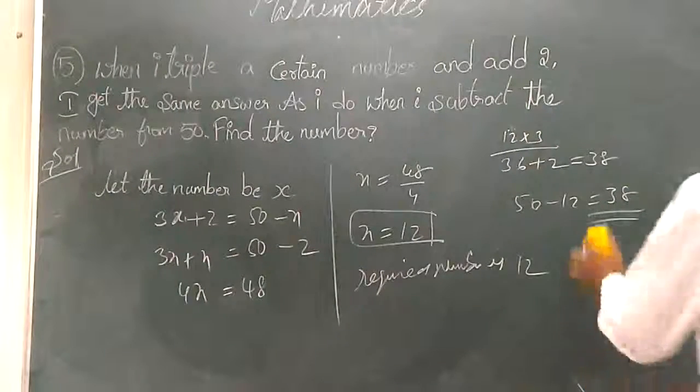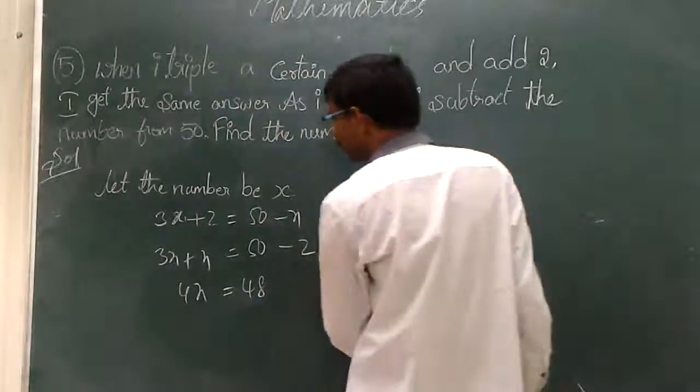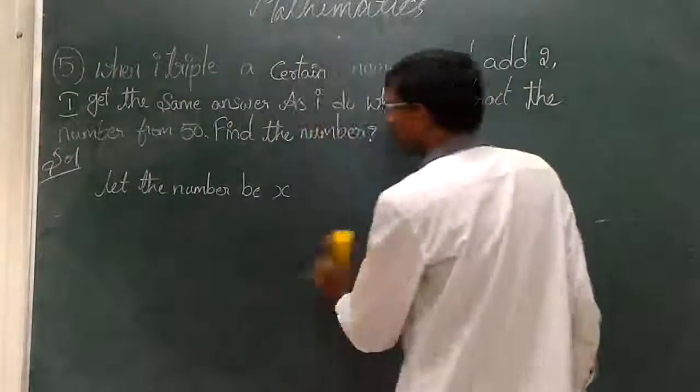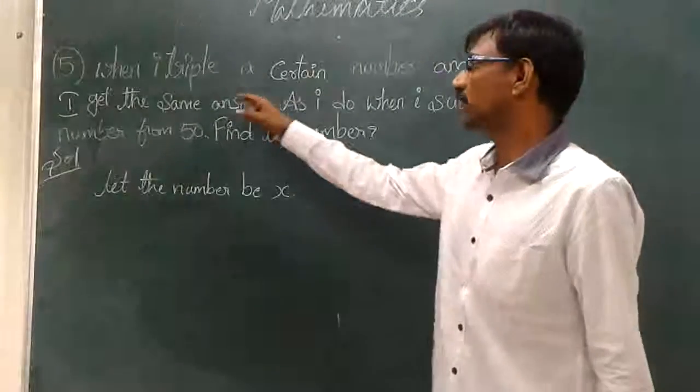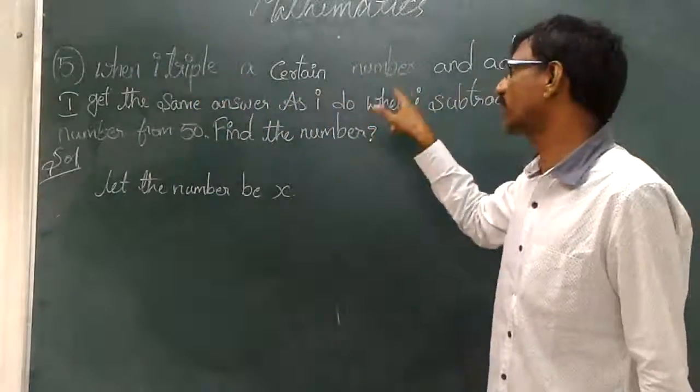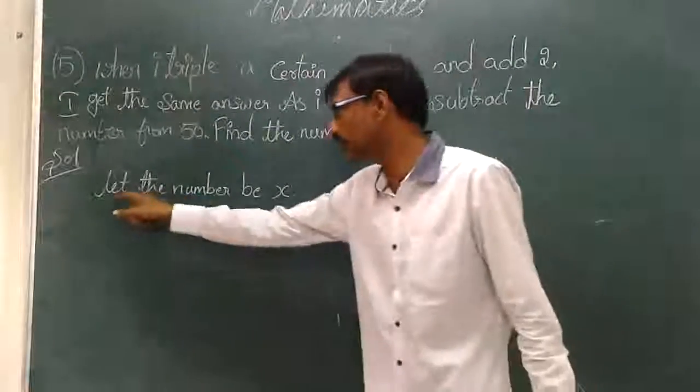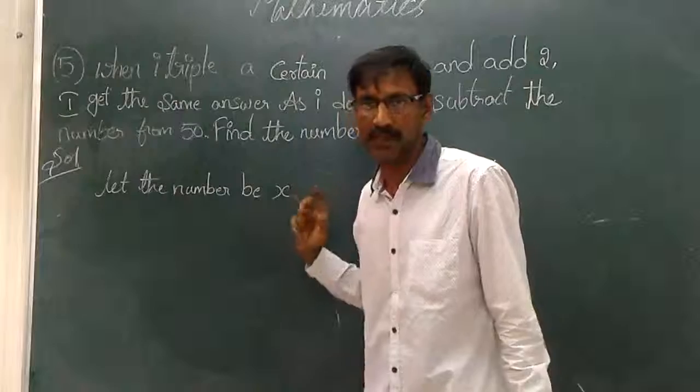Once we try this problem, we will explain again. See this problem. When I tripled a certain number, I don't know the certain number. That's the reason I take it here. Let the number be x.